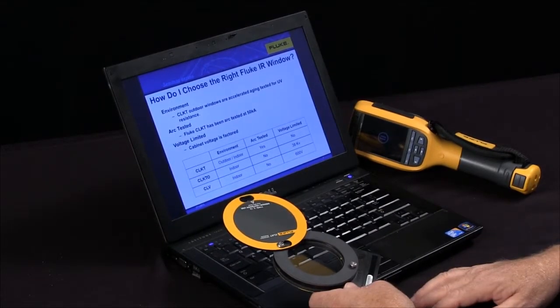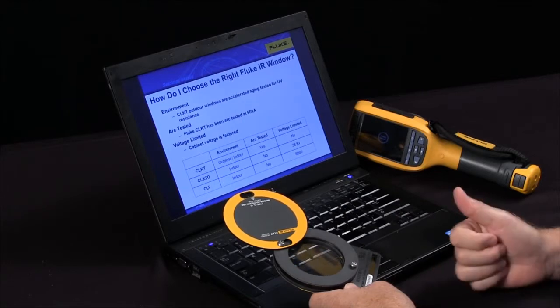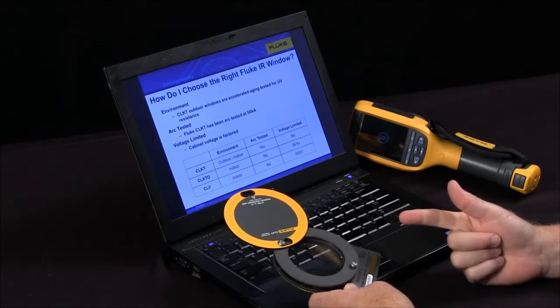So how do you know which is the right Fluke IR window to choose for the application that you're working in? Well, the first thing to do is determine the environment. Is it an outdoor application or an indoor application?